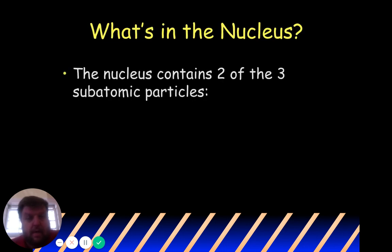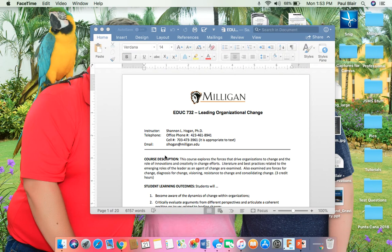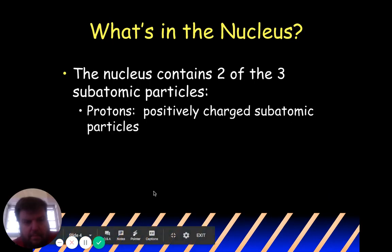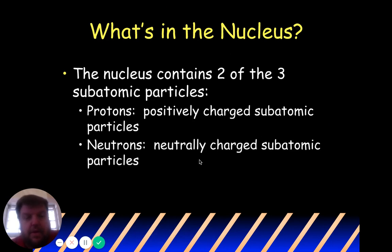In the nucleus there are two particles. Protons are positively charged subatomic particles — two P's: protons are positive. Neutrons are neutrally charged subatomic particles. So understand: protons are positive, neutrons are neutral — both in the nucleus. The nucleus contains neutrons which are neutral and protons which are positive.